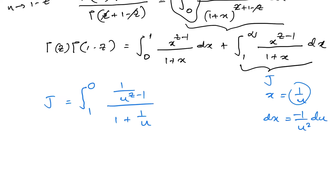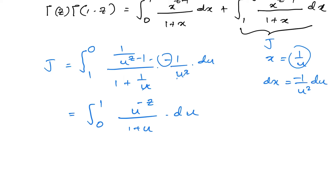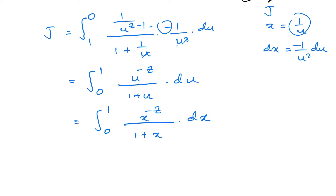After substituting 1/(1+x) = u/(1+u) and dx = -1/u² du, we simplify. The u terms cancel in the numerator, and flipping the limits removes the minus sign. J becomes the integral from 0 to 1 of x^(-c) over (1+x) dx.